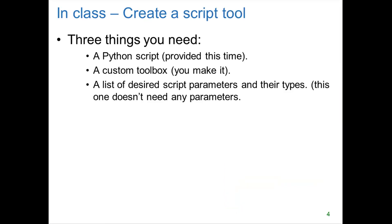The best way to really understand script tools and how to make them is to try making one yourself. In this exercise on the in-class page called 'Create a Script Tool,' you're going to use a Python script that's already provided, run it to see how it works, and then create a custom toolbox with a script tool inside it. In this particular example, you're not going to use any parameters yet, so the parameter list is empty.